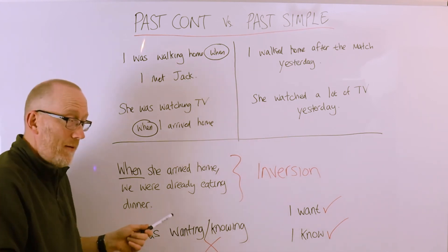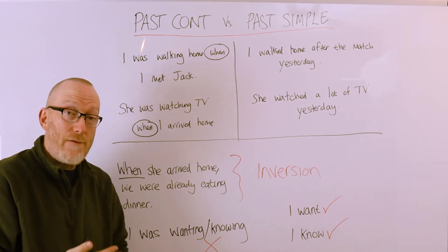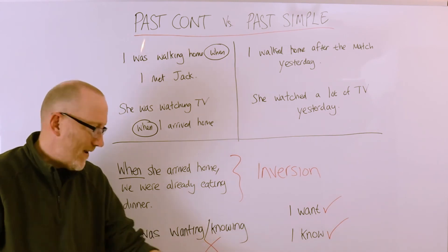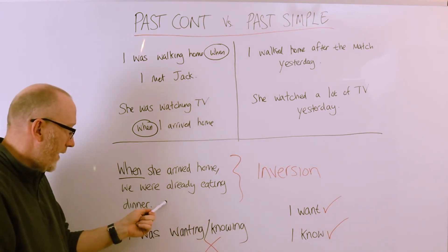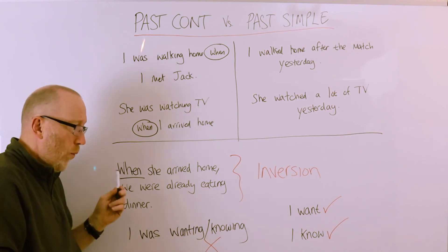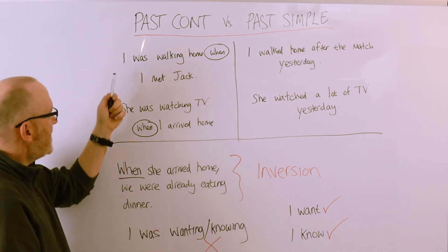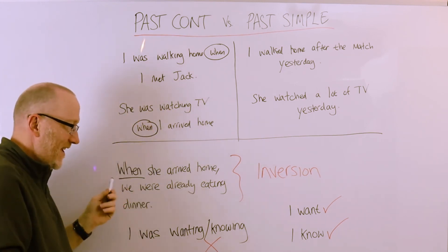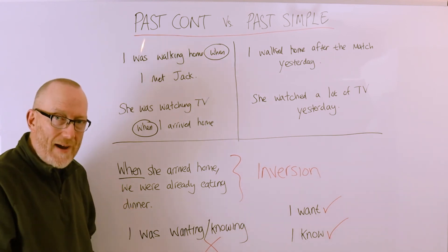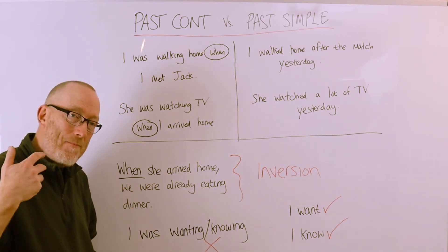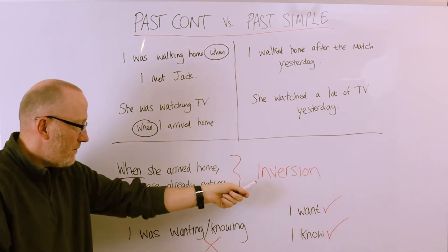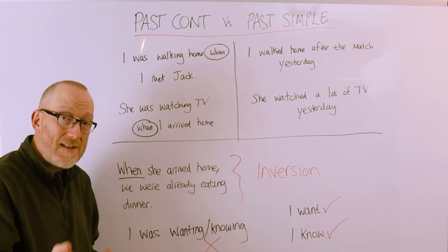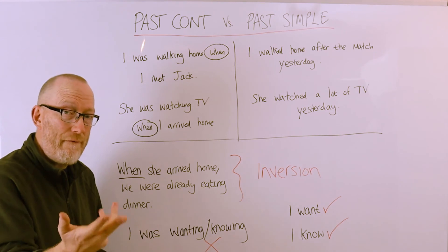Inversion is a great thing because it allows you to say exactly the same thing but in a different way. You're putting the order of the information slightly differently, which gives you more variety. I could say 'We were already eating dinner when she arrived home,' and it's the same meaning. Learning how to use things like inversion allows you to add variety to your sentences and speech, which makes you sound more fluent.